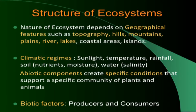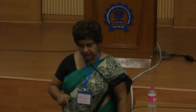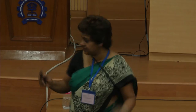Why are there different types of ecosystems? Mainly because of different geographical features like topography, altitude, hills, mountains, plains, rivers, lakes, coastal areas, temperature, salinity, and rainfall. Abiotic components create specific conditions that support a specific community of plants or animals adapted to that particular condition. This shows the incredible oneness of nature — how everything is linked with each other, even human beings, tigers, and grass, all through the food chain.